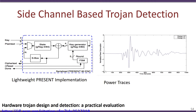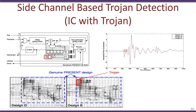We look at two designs G and G-star, which are considered to be the golden models and thus do not have a trojan. We notice that the power profile for these two devices is exactly identical when plotted together for the same input and key. If we compare these devices with a device that actually has a trojan, we can examine the trojan implementation, which includes a trigger circuit, some flip-flops, and if triggered, the key present can be leaked out through the ciphertext.